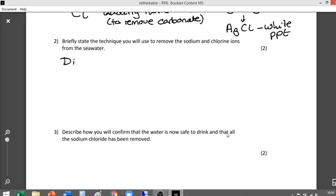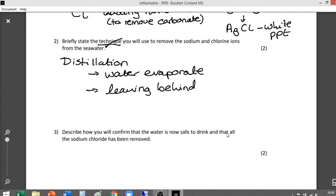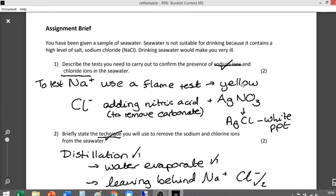How do we actually remove the sodium ions or the chloride ions? We remove it via distillation. So the technique is distillation. Briefly state the technique done, but let's give a little bit of a description as well. The water would evaporate, leaving behind the sodium ions and the chloride ions. That's worth two marks, mark number one, mark number two. First stating distillation would probably get you the first mark.